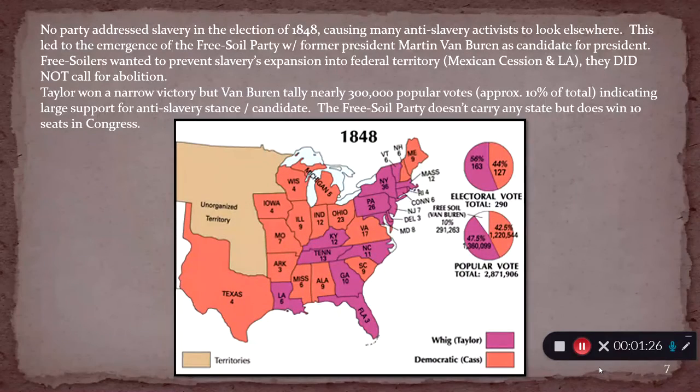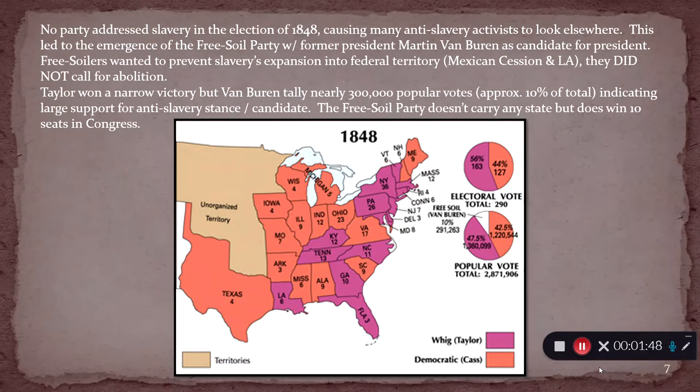The question becomes: how do average people in the country experience the question of slavery's expansion? What kinds of arguments are being made either in favor of or against slavery? How does slavery impact the political arena in the 1800s before the Civil War? One thing we can look at — and I don't normally like to put up a lot of maps of election results — but in some cases they give us a really interesting view, and one of those is the election of 1848.